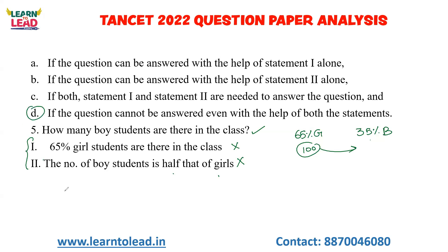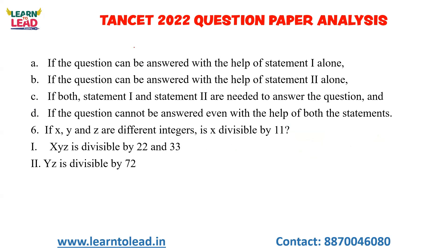The question asks how many boys are there in the class — meaning it needs the exact number of boys students. Neither statement alone nor both together give us a definite count, so the data is not sufficient.